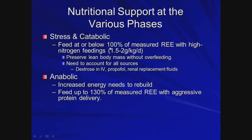The REE is going to vary based on the phase of stress. In the initial catabolic phase, you need to feed at about 100% of their REE. Once you get to the rebuilding anabolic stage, you actually want to overfeed them — especially with proteins — because they are basically rebuilding body mass.